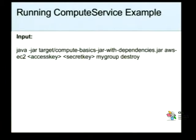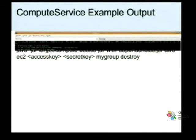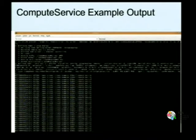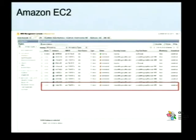Em seguida, a nossa aplicação já foi executada, então vamos destruir esse nó lá no grupo de segurança mygroup. Ao invés de mygroup.add, a gente vai executar mygroup.destroy. Esse mygroup.destroy vai terminar essa instância, esse nó que foi instanciado lá no ambiente do Amazon EC2. O resultado é que ele está logando a destruição desse nó. E por fim, aquela instância que estava no estado running agora está no estado terminated. E aí a gente termina esse exemplo do Compute Service.